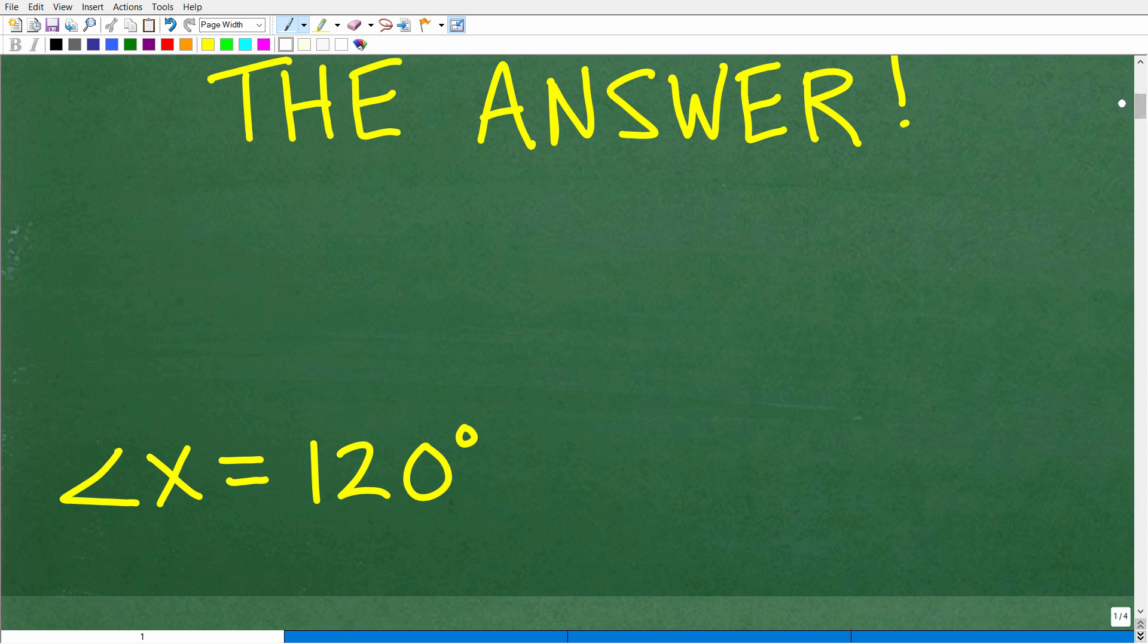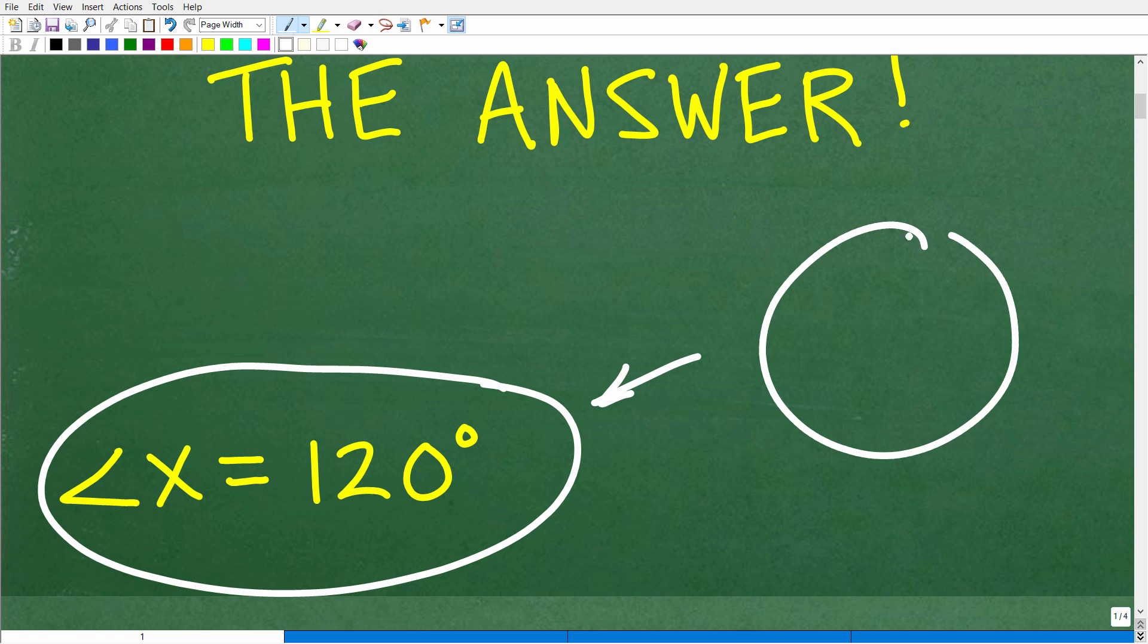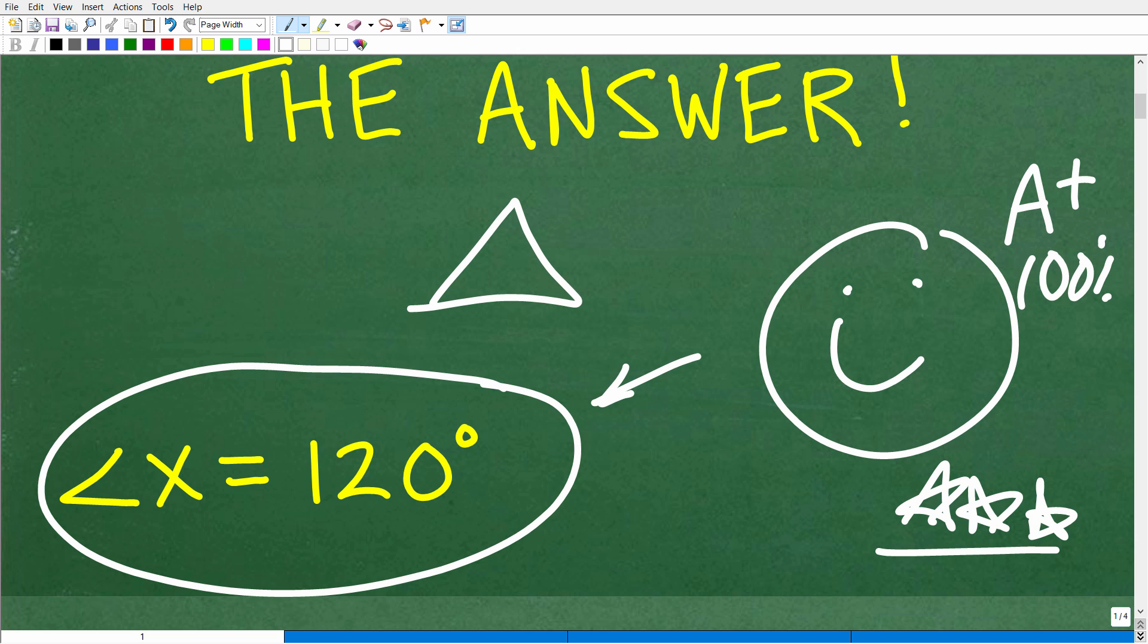Well, angle X is equal to 120 degrees. All right, well, if you got this right, we have to celebrate by giving you a nice little happy face and a plus a 100% and multiple stars. So you can brag to your friends and family that indeed you are a certified professional expert in the area of properties of triangles and specifically the angles within a triangle.